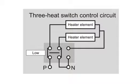The 3-heat switch uses two elements and connects them in three different ways. The first way is the low setting and it connects the two heating elements in series.